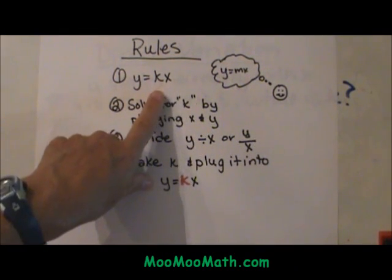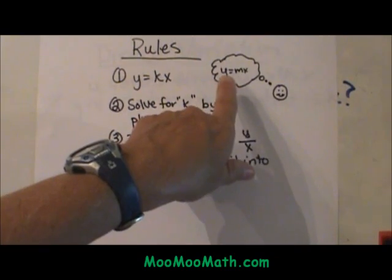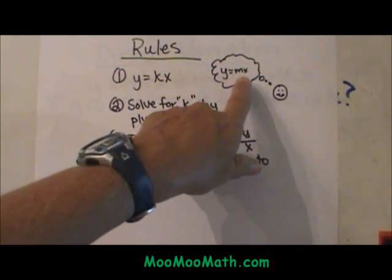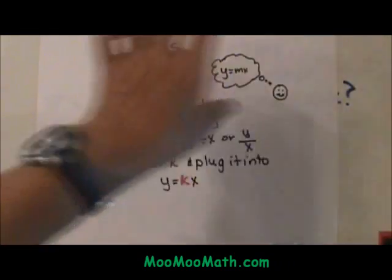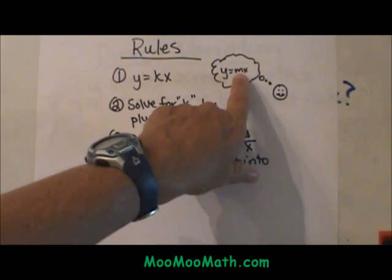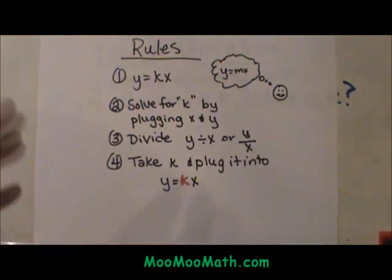I always think it is the same thing as y equals mx plus b, but b is gone at 0. So m and k are very similar. They are kind of like slope.